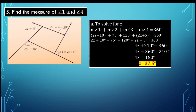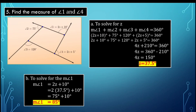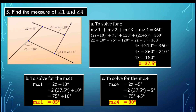Now let's use Z equals 37.5 to find the measures of angle 1 and angle 4. For angle 1: measure of angle 1 equals 2Z plus 10, so 2 times 37.5 plus 10, which gives 85 degrees. For angle 4: 2Z plus 5, so 2 times 37.5 plus 5, which gives a total of 80 degrees. So the measure of angle 1 is 85 degrees, and the measure of angle 4 is 80 degrees.